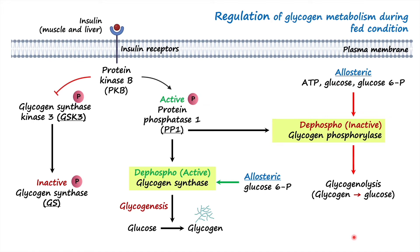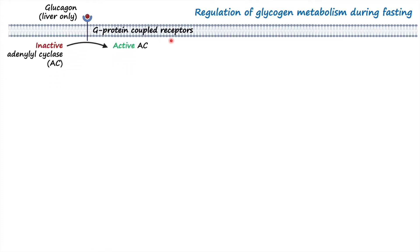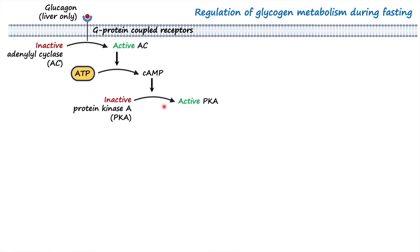Now let's talk about regulation of glycogen metabolism during the fasting state. When blood glucose levels are low, the alpha cells of the pancreas release glucagon — this occurs only in the liver. Glucagon binds to G protein-coupled receptors, which activates adenylyl cyclase, increasing cyclic AMP levels synthesized from ATP. Increased cyclic AMP subsequently activates protein kinase A (PKA).